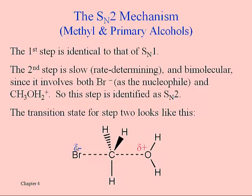The bromide comes in simultaneously to the water leaving on the other side, and this is true for methyl alcohol as well as primary alcohols in general. Because we have to have the bromide coming in and matching up with the alcohol, and both of those have to be oriented correctly for this reaction to work — that's why it's called bimolecular. That's what the 'two' stands for.